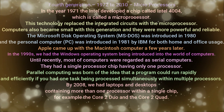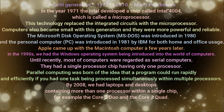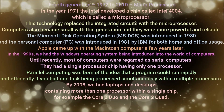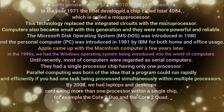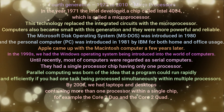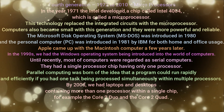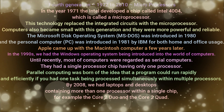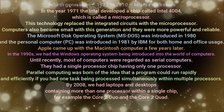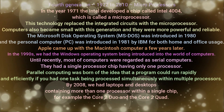Until recently, most computers were regarded as serial computers, having a single processor chip with only one processor. Parallel computing was born of the idea that a program could run rapidly and efficiently if one task was processed simultaneously within multiple processors. By 2008, laptops and desktops contained more than one processor on a single chip — for example, the Core 2 Duo and the Core 2 Quad.